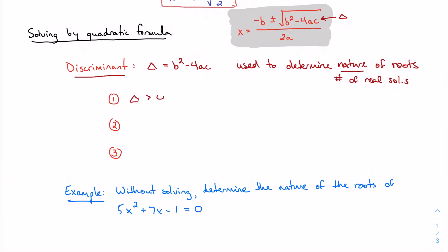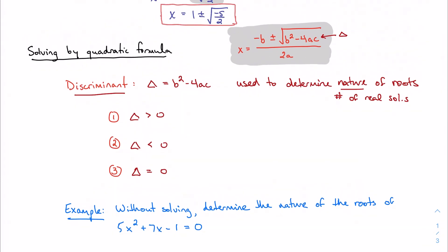Without solving, it's going to tell us the number of real solutions. So let's kind of take a look here. I have three ways my discriminant can turn out. My discriminant can be either greater than 0, so positive, less than 0, so negative, or exactly equal to 0. Well, let's think about this. Let's use our quadratic formula and think about this.